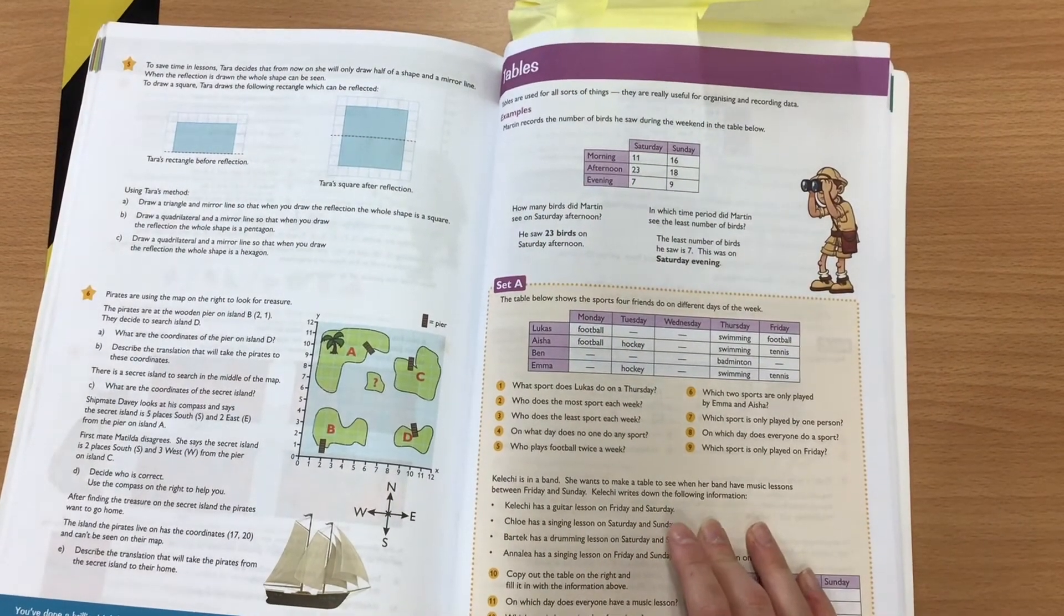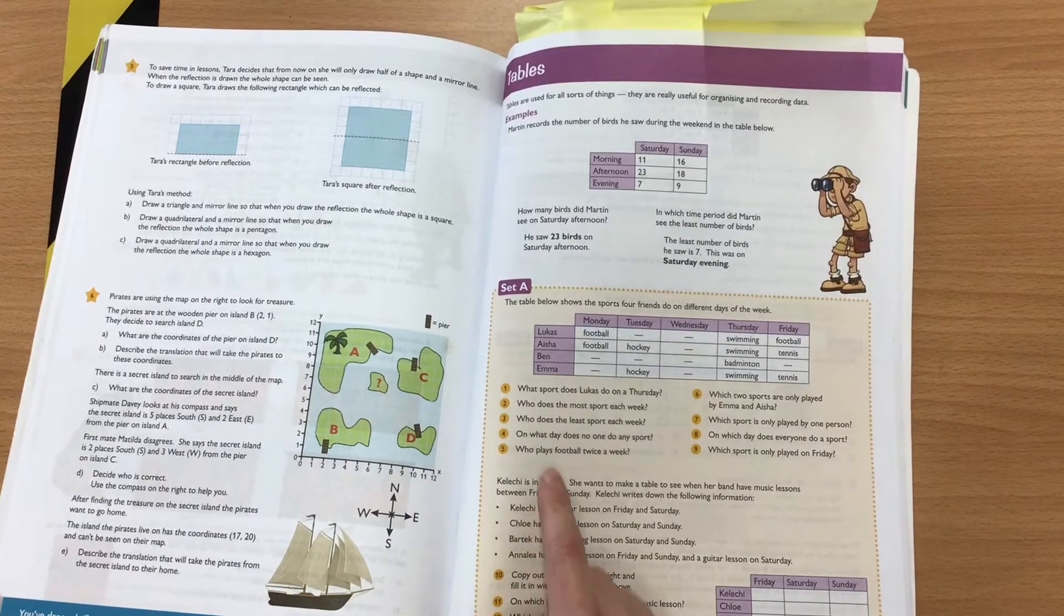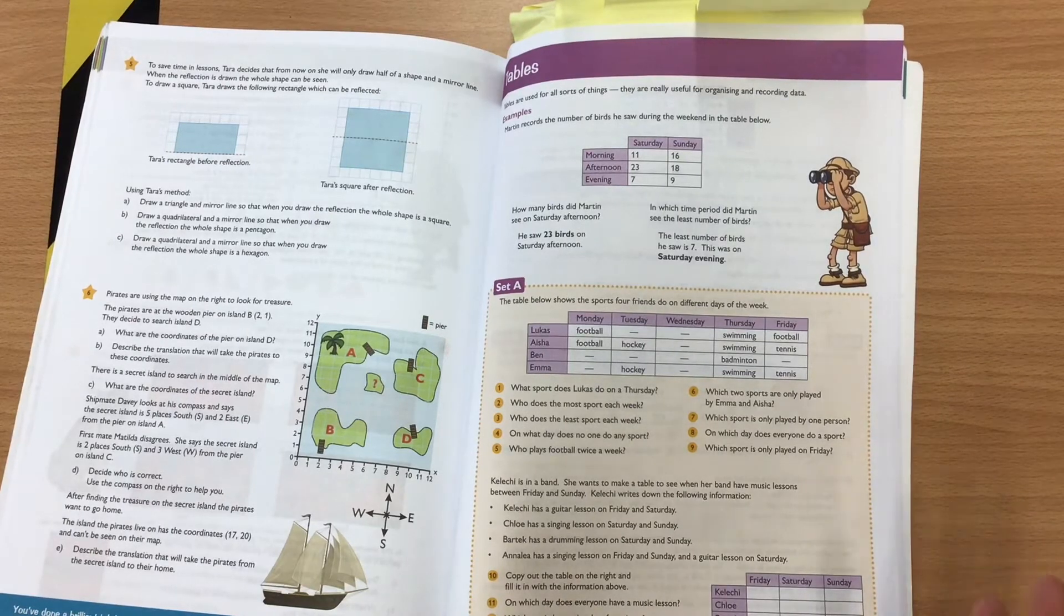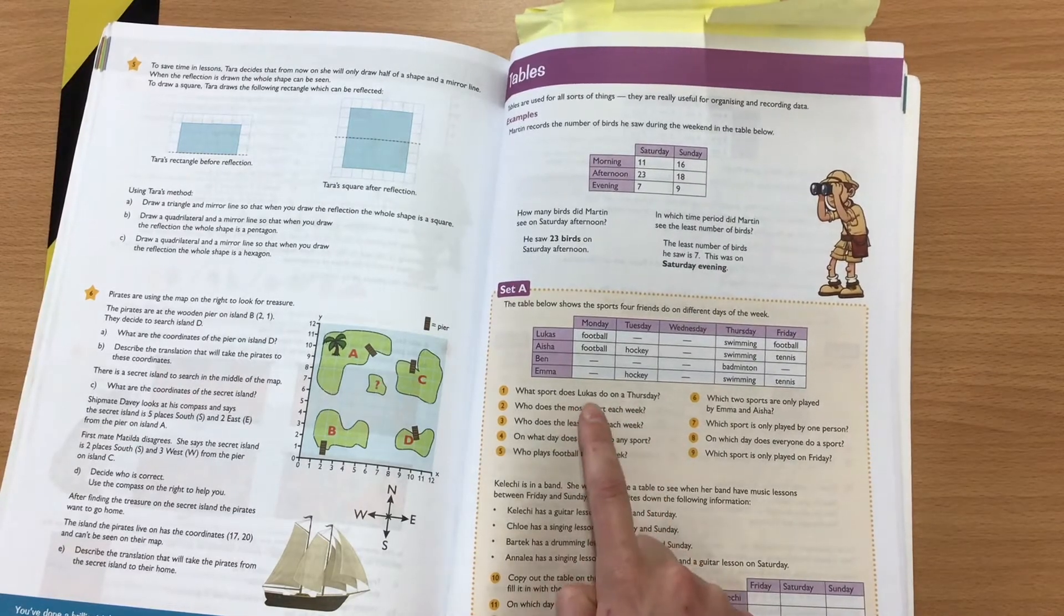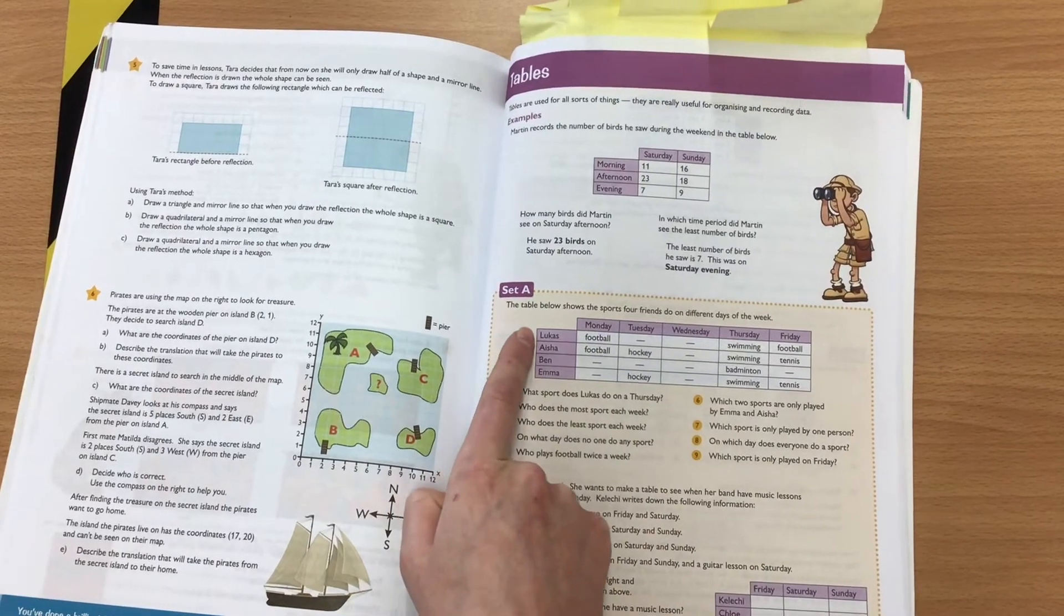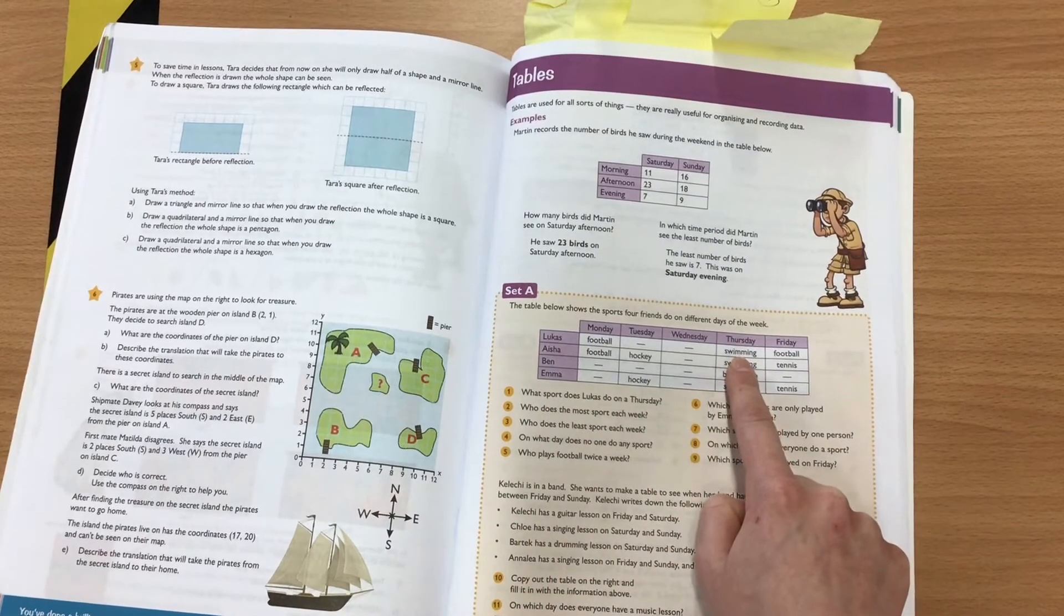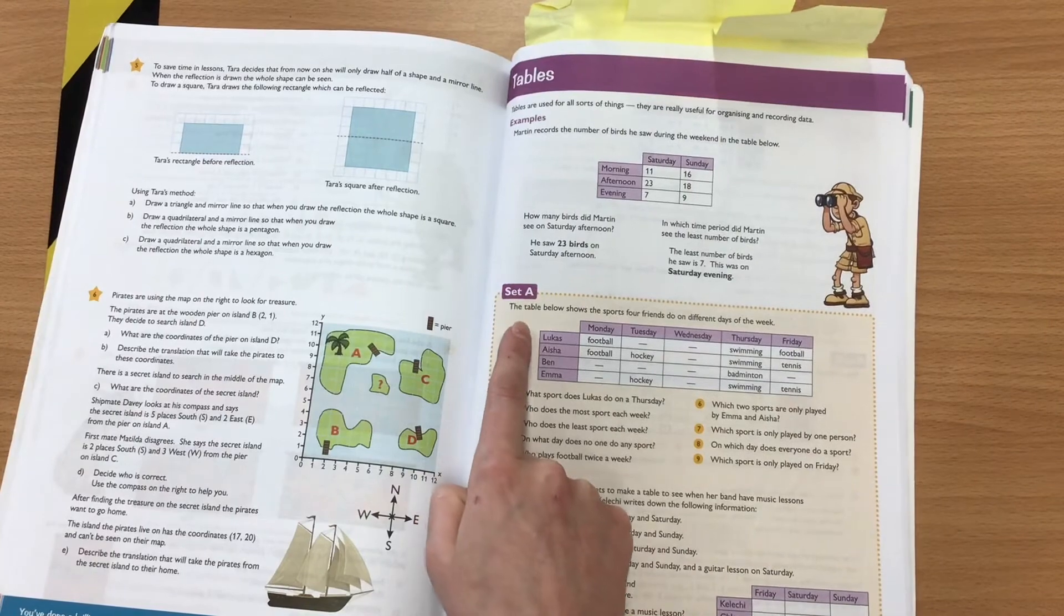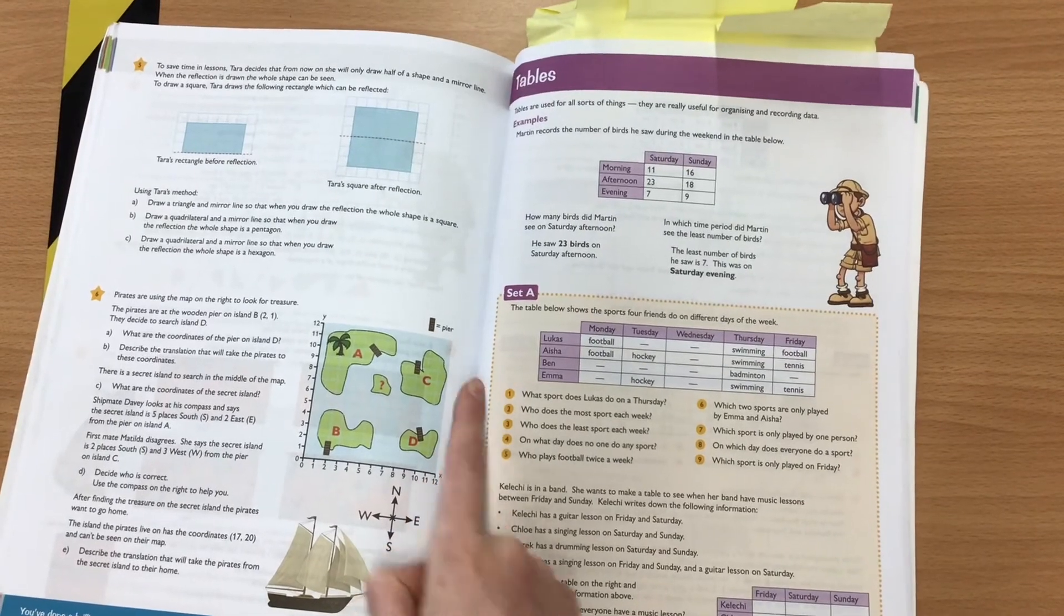Okay, so the first question that I'm going to go through with you is question one. So it says, what sport does Lucas do on a Thursday? How do I find out what sport does Lucas do on a Thursday? Well, the two pieces of information I have are Lucas and Thursday. So what I want to do is I go along to Lucas and I go across to Thursday, and then I can see that it says Lucas does swimming on a Thursday. So go down to Lucas and across to Thursday. So my answer for question one would be swimming.